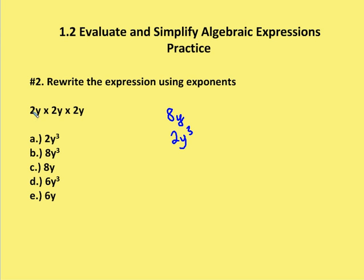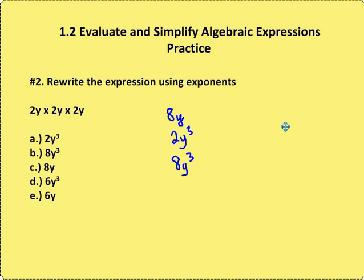But in this case you have to multiply both the coefficient and the variable. So you should end up with an answer 8y to the third. So b is your correct answer.